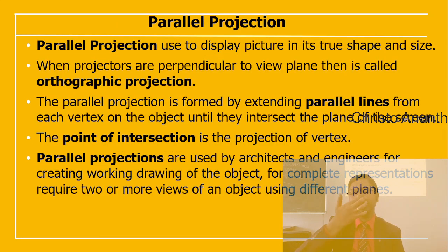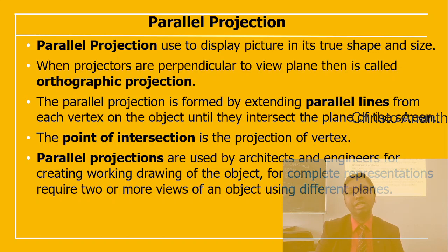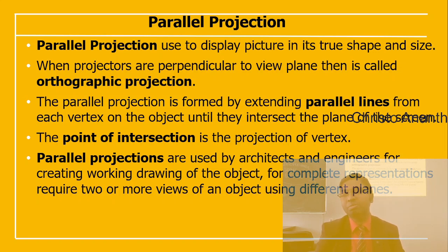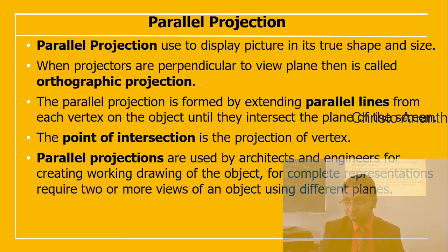Parallel projection displays a picture with true shape and true size. When projectors are perpendicular to the view plane, it is called orthographic projection. Parallel projection is formed by extending parallel lines from each vertex of an object until they intersect the screen plane. The point of intersection is the projection of the vertex. Architects and engineers use parallel projections for working drawings, typically requiring two or more views using different planes.